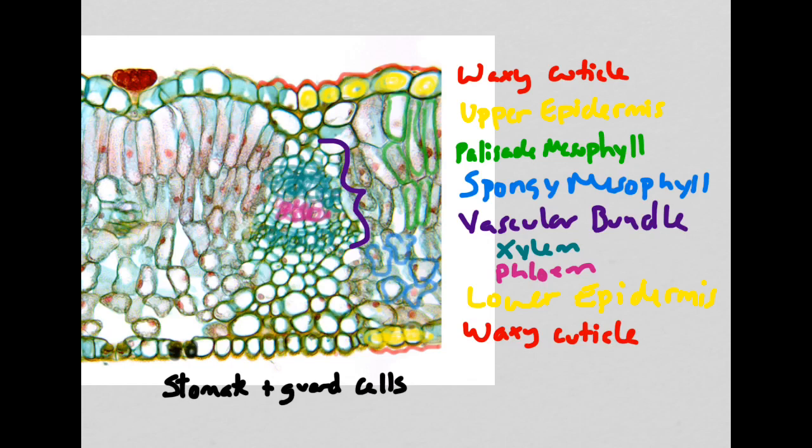In the palisade mesophyll, which is outlined in green, the cells are what we call columnar, they're very long and skinny. In the spongy mesophyll, the cells are easy to pick apart because they have a large space in between them and they're also more irregularly shaped.